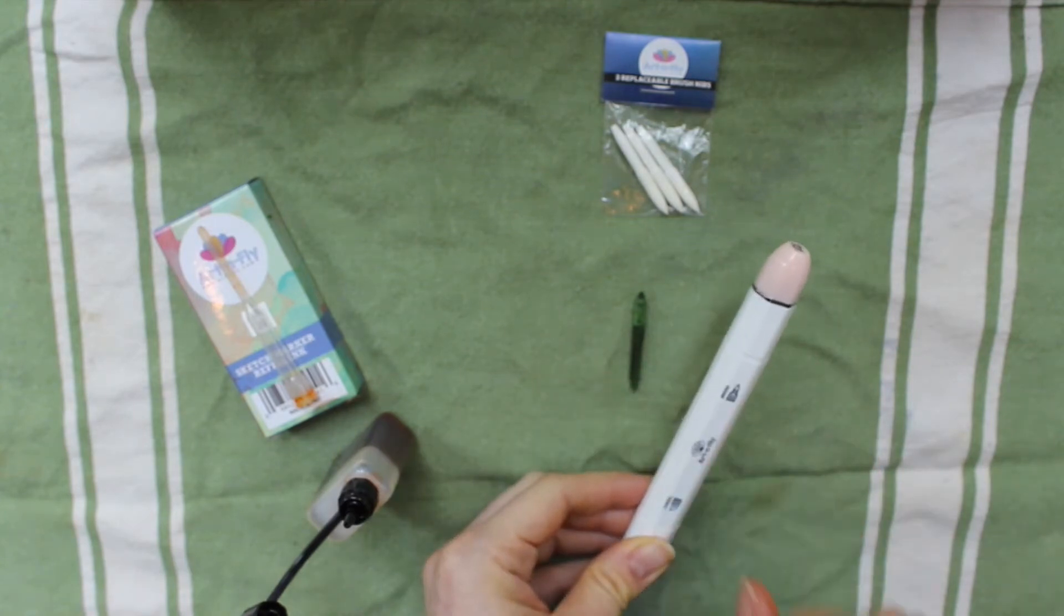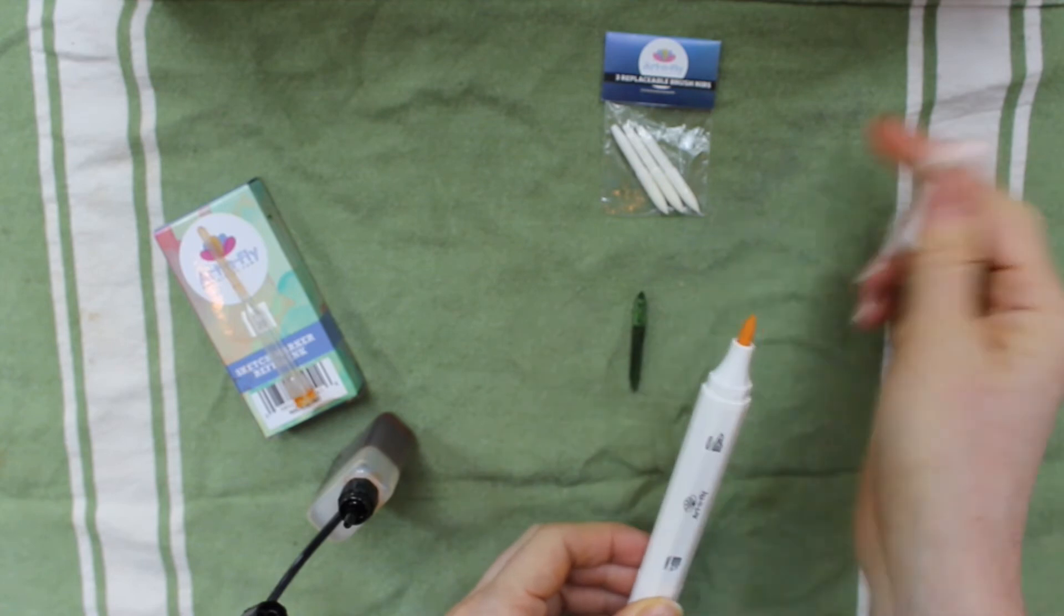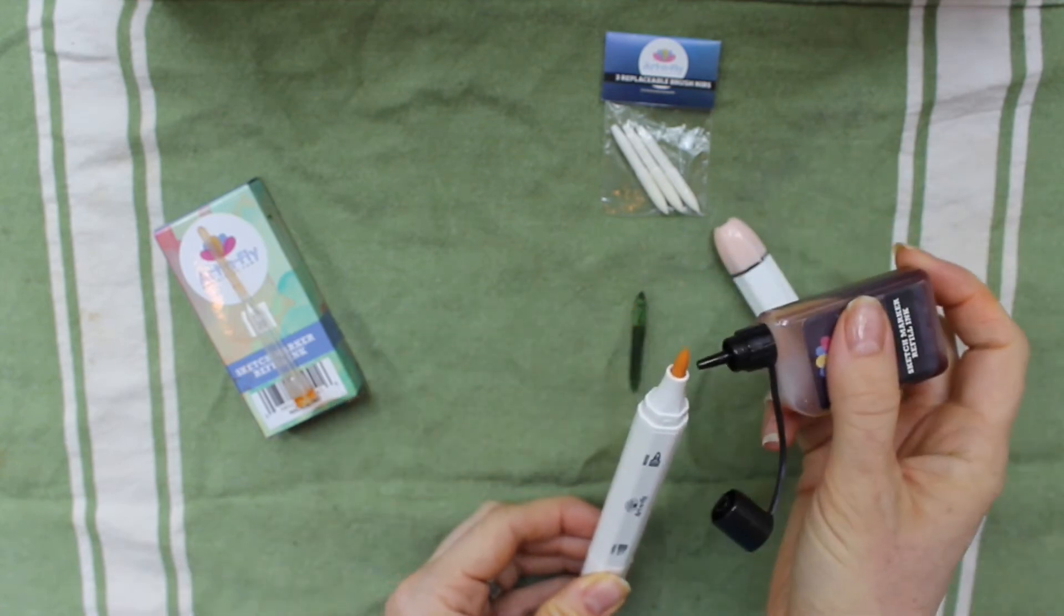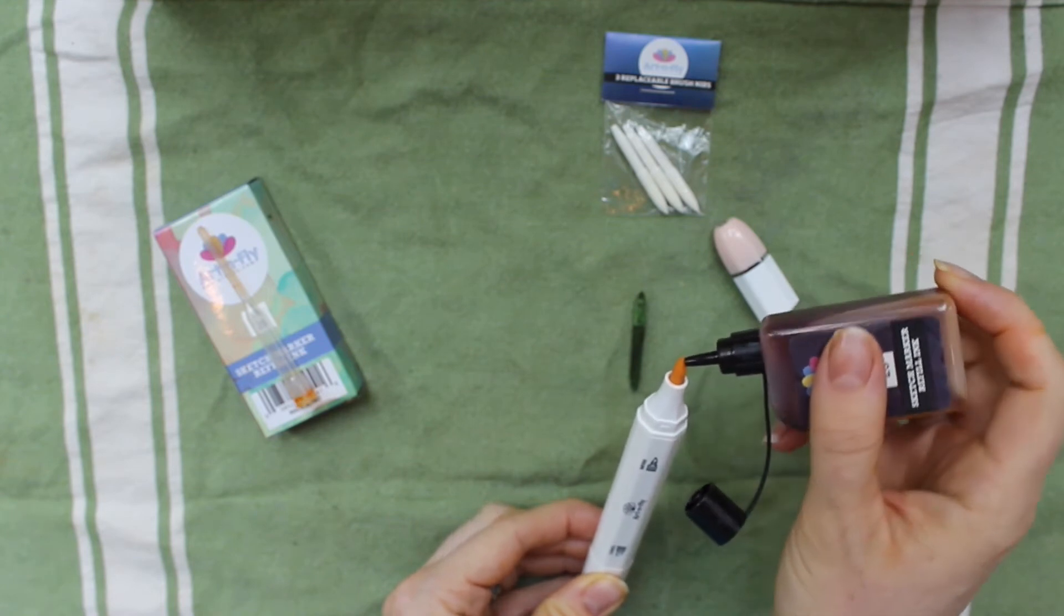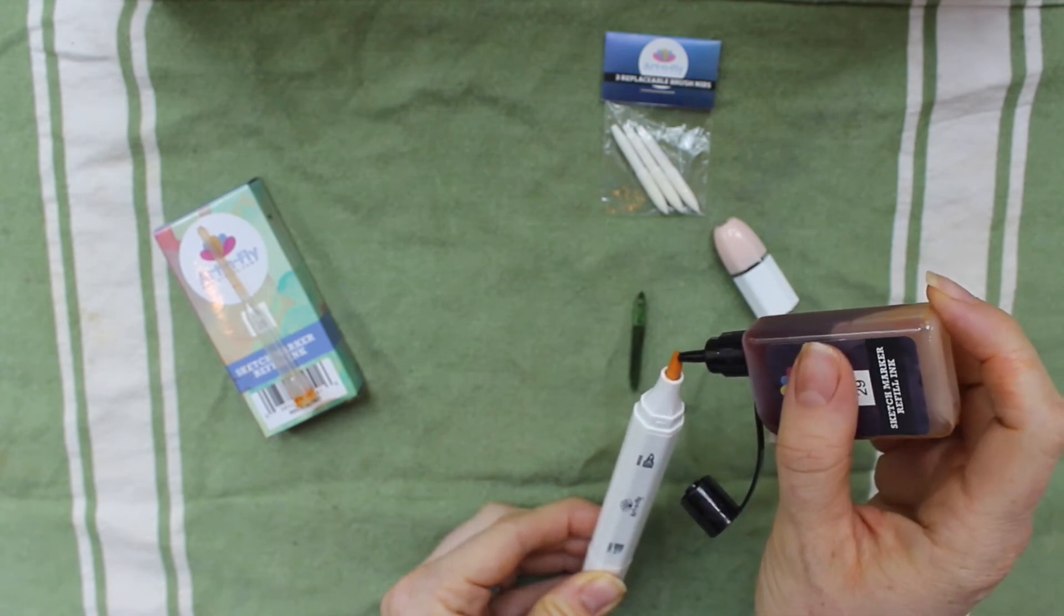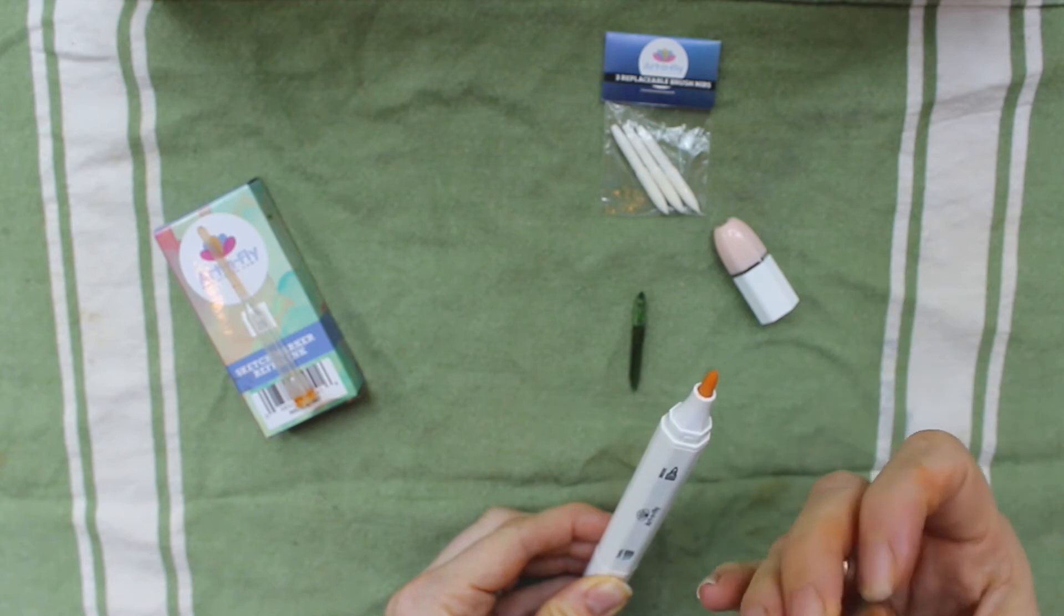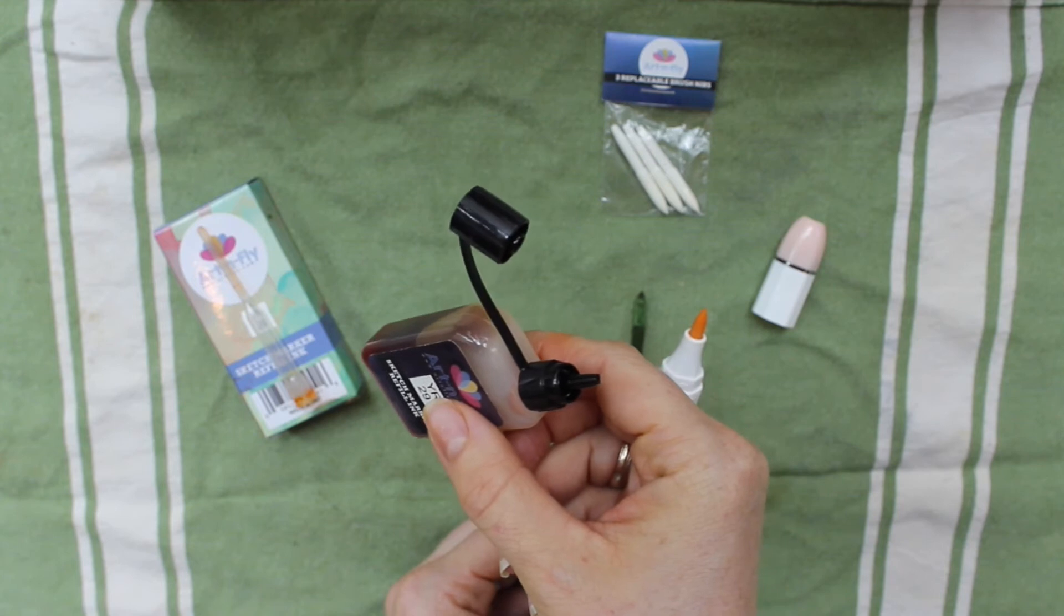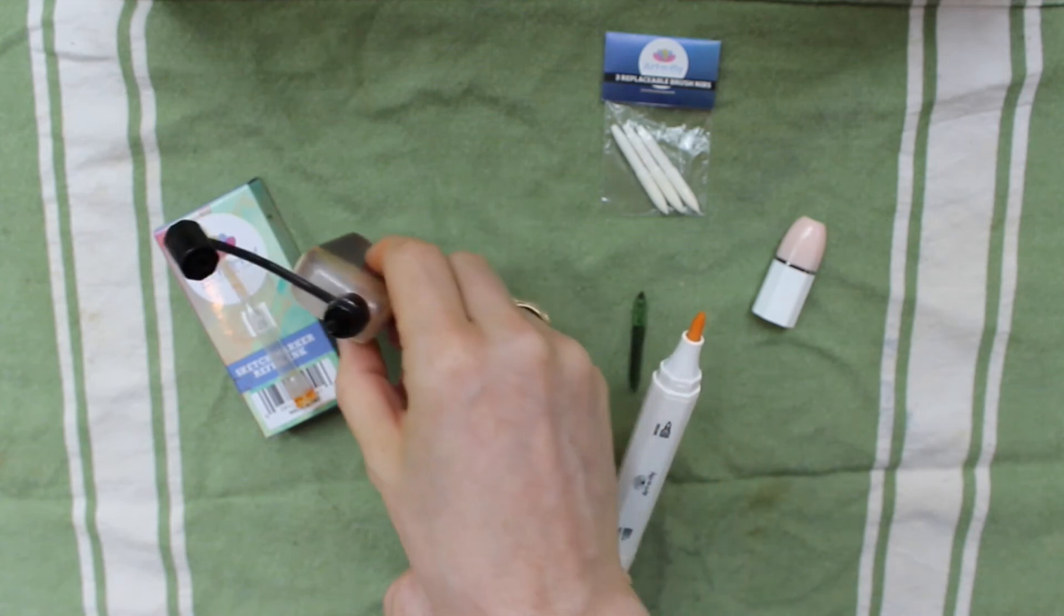The first way, if you're not planning to replace the brush nib, is to simply remove the cap on the brush nib end and place the refill against the nib, and then squeeze about a little less than 10% of the bottle. This should be enough ink to refill the marker about 13 to 15 times.